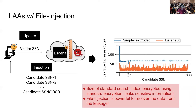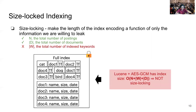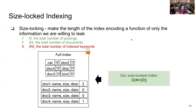This shows that a standard search index encrypted using standard encryption leaks sensitive information through index size, and file injection is powerful enough to recover data from this leakage. To fix the size leakage, we propose a definition called size locking, which makes the length of the index a function only of the information we are willing to leak. In this work, we are willing to leak the total number of postings and total number of documents in the index, but not the total number of index keywords. Our size locked construction has size as a function of only the total number of postings and total number of documents.